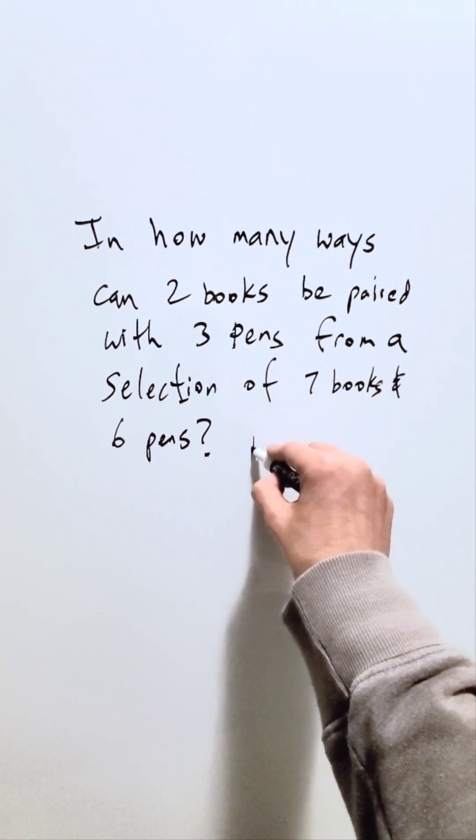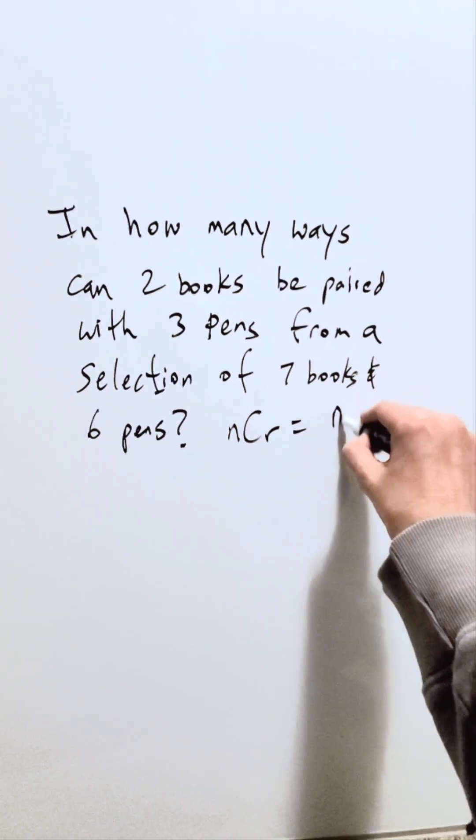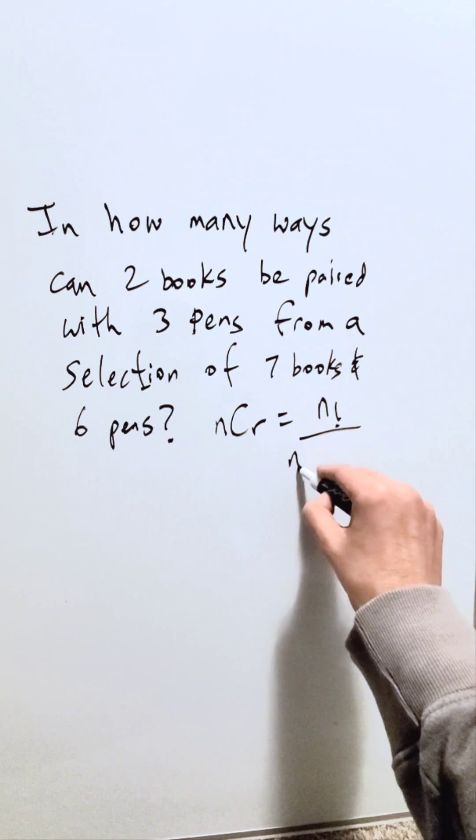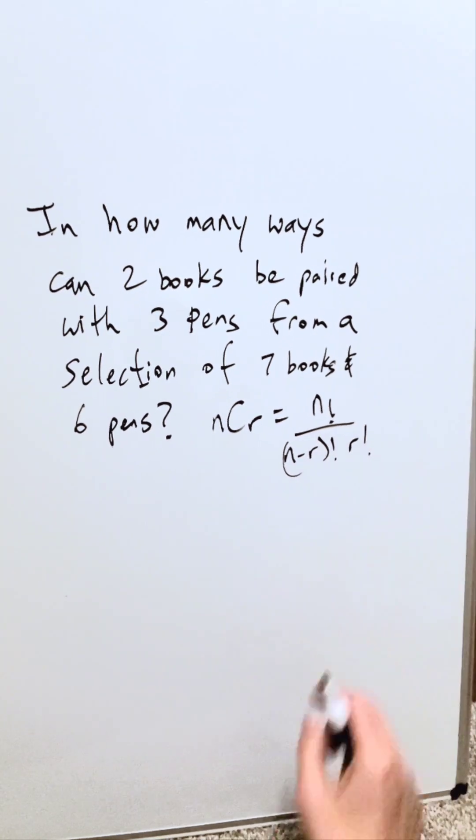Hence you're thinking combinations nCr. That'll be n factorial over n minus r factorial times r factorial.